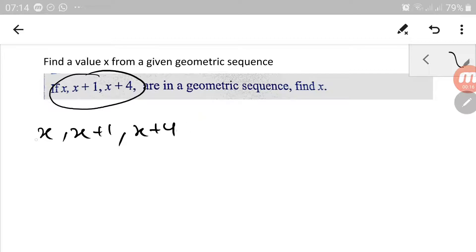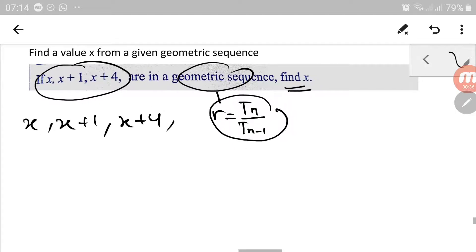We have already been told that these three form a geometric sequence, so they must have r which is tn over tn minus 1. By using this information, we can find the x that is needed.